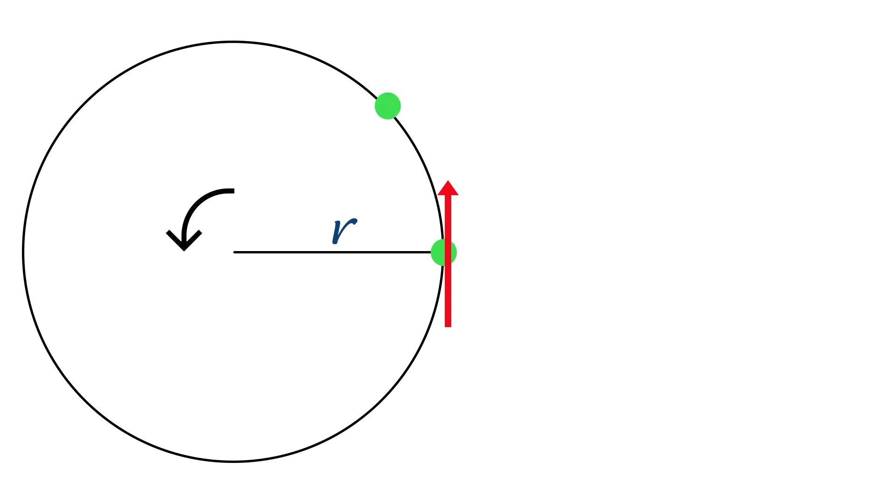We can of course repeat this at any point you like around the circle and it quickly becomes apparent that the velocity is changing constantly although the magnitude remains fixed.